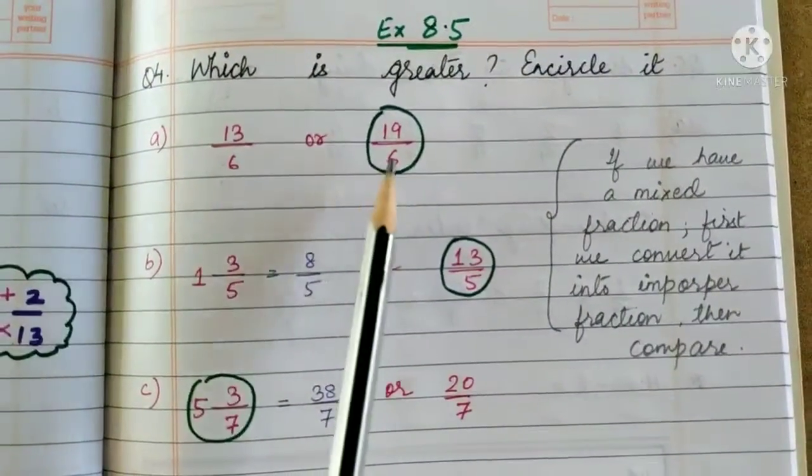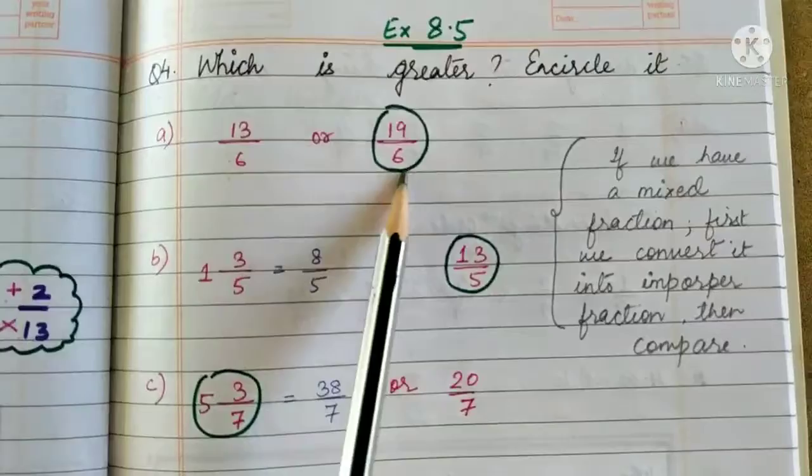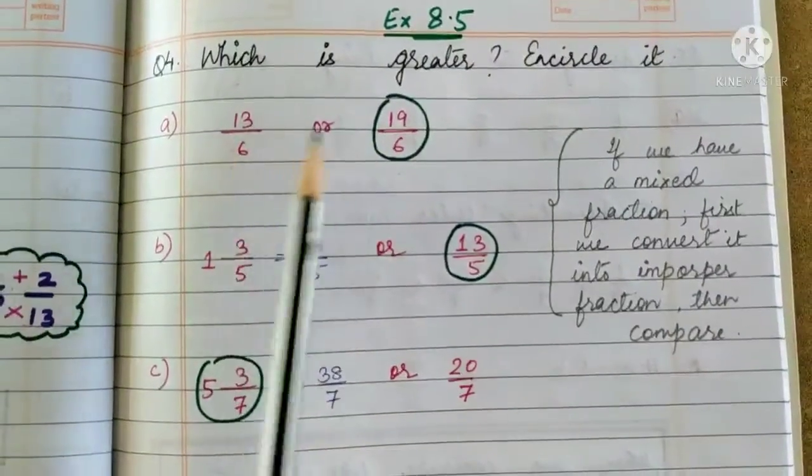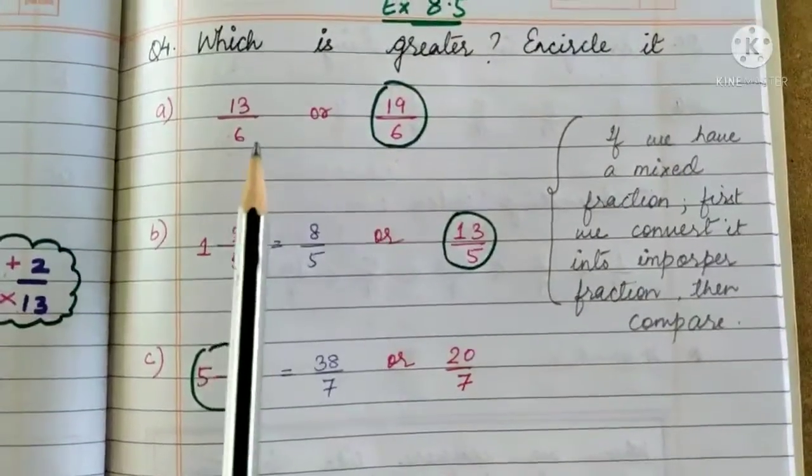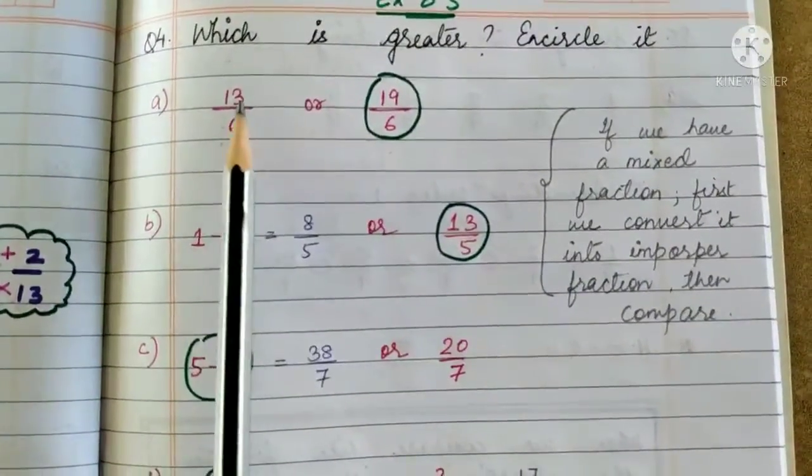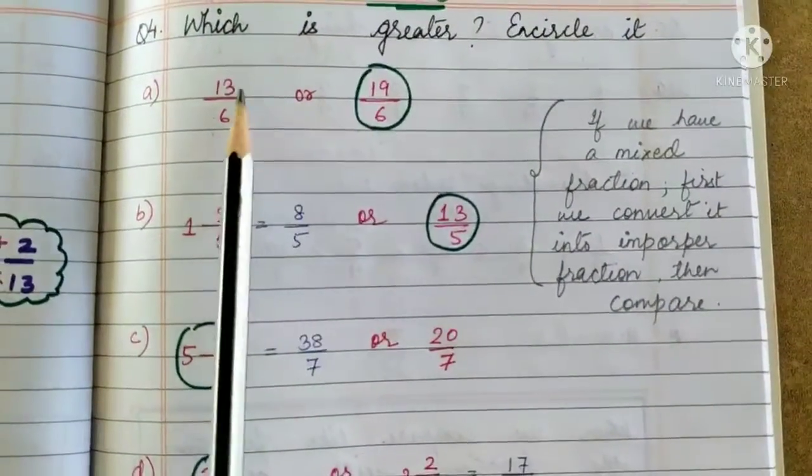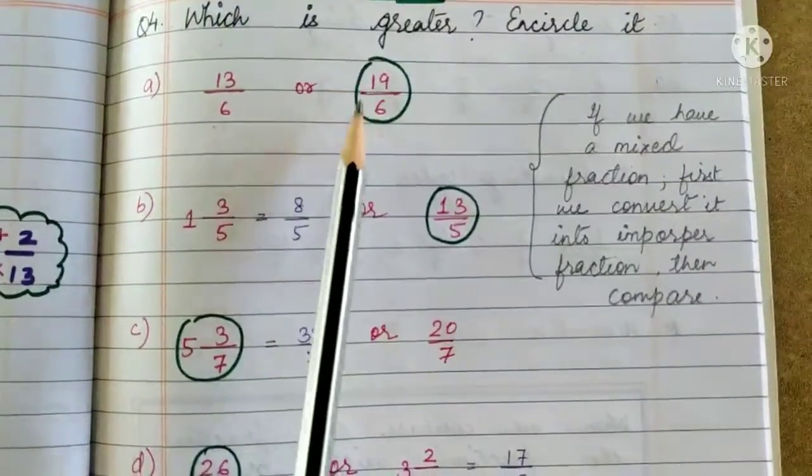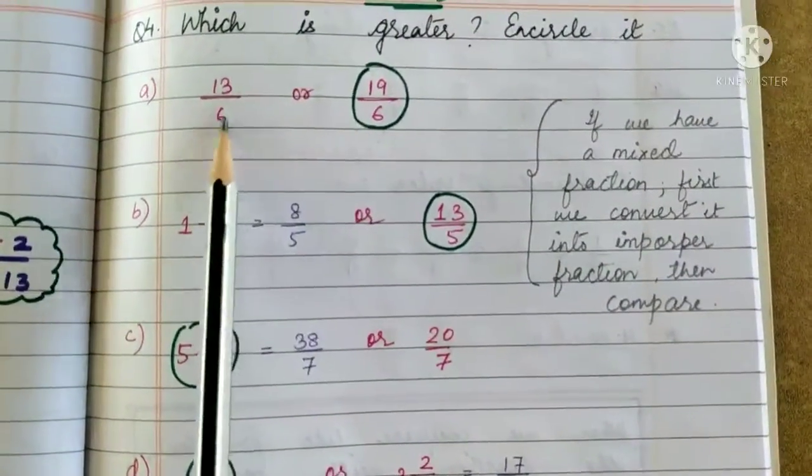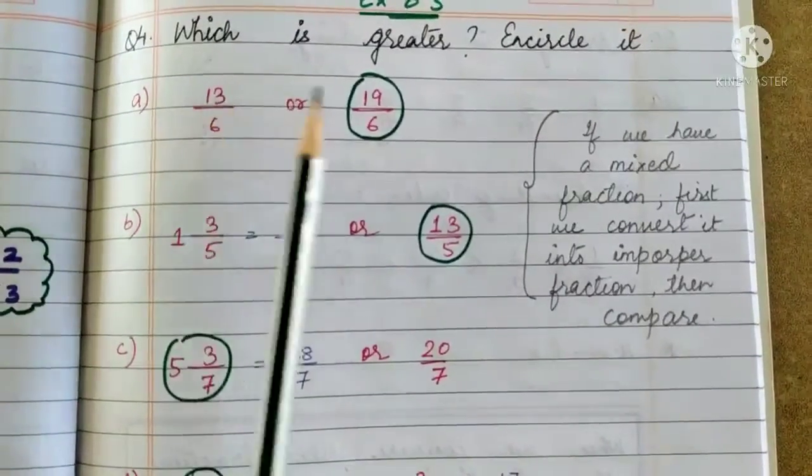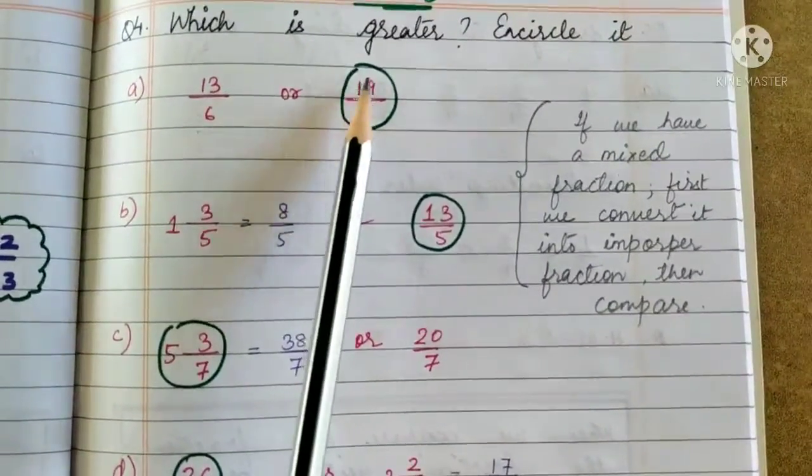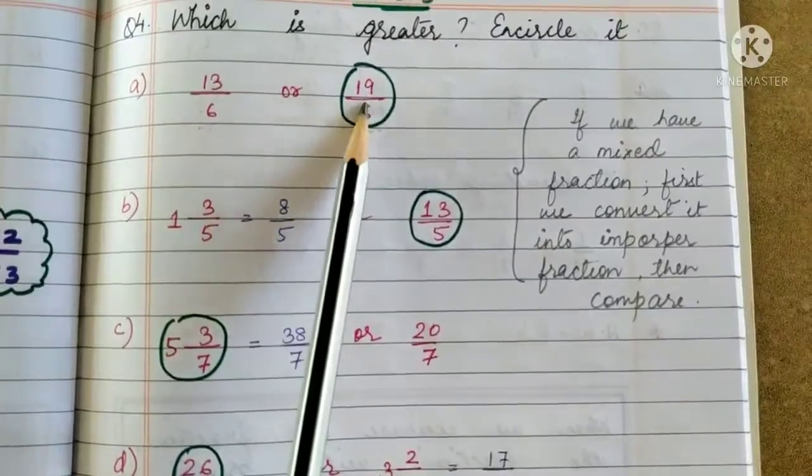Where we have like fractions, that is the denominators are same, we simply compare the numerators. Like here, 13 by 6 or 19 by 6. Denominators are same, 6, so we compare the numerators, 13 and 19. Which one is greater? 19, so the entire fraction becomes greater.